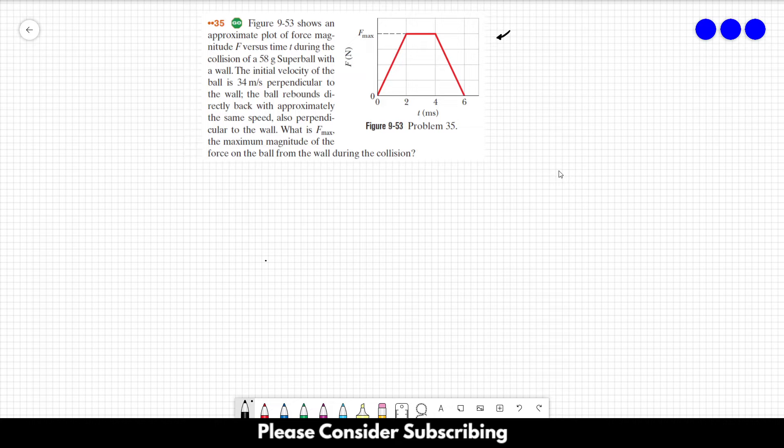Perpendicular to the wall, the ball rebounds directly back with approximately the same speed, also perpendicular to the wall. What is F_max, the maximum magnitude of the force on the ball from the wall during the collision?